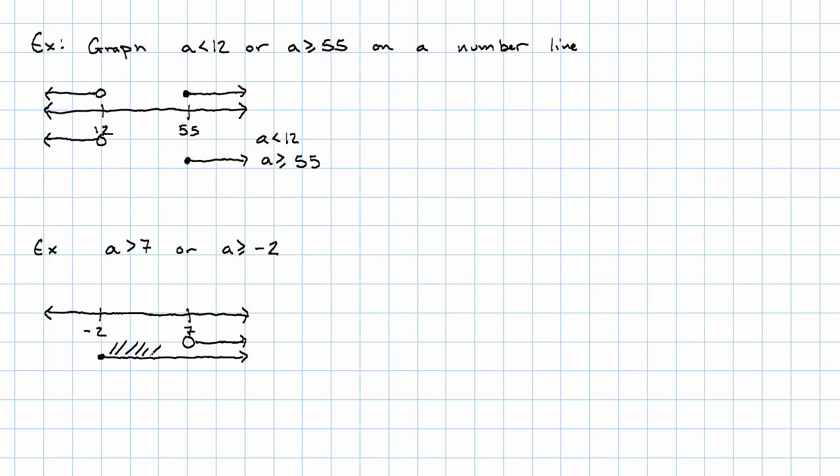And now we want all of the points that are on one or the other or both. It looks like that just means that A is greater than 7 isn't giving us anything extra. Right? Everything that's greater than 7 is automatically greater than or equal to negative 2 anyway.